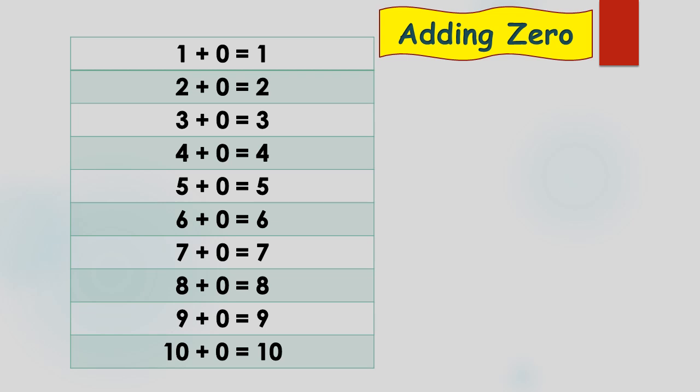We added 1 and 0: 1 plus 0 equals 1. Similarly, 2 plus 0 equals 2. 3 plus 0 equals 3. 4 plus 0 equals 4. 5 plus 0 equals 5. 6 plus 0 equals 6. 7 plus 0 equals 7. 8 plus 0 equals 8. 9 plus 0 equals 9. 10 plus 0 equals 10. When we add 0 to any number, we get the same number.